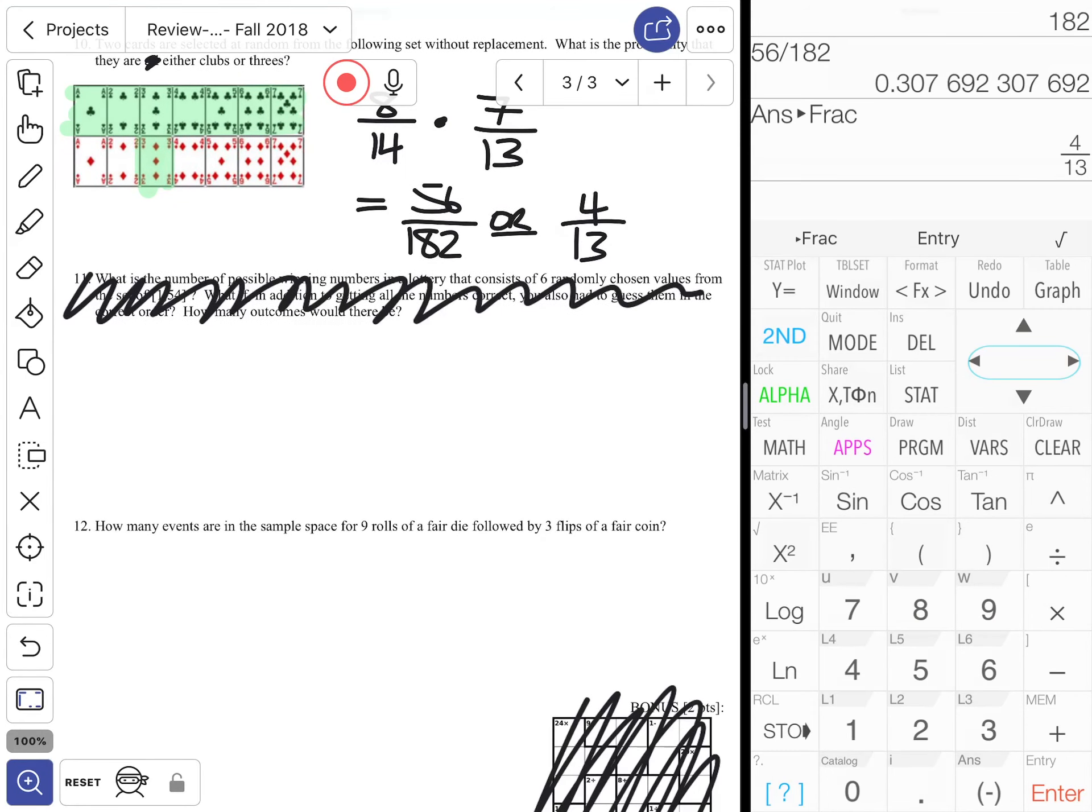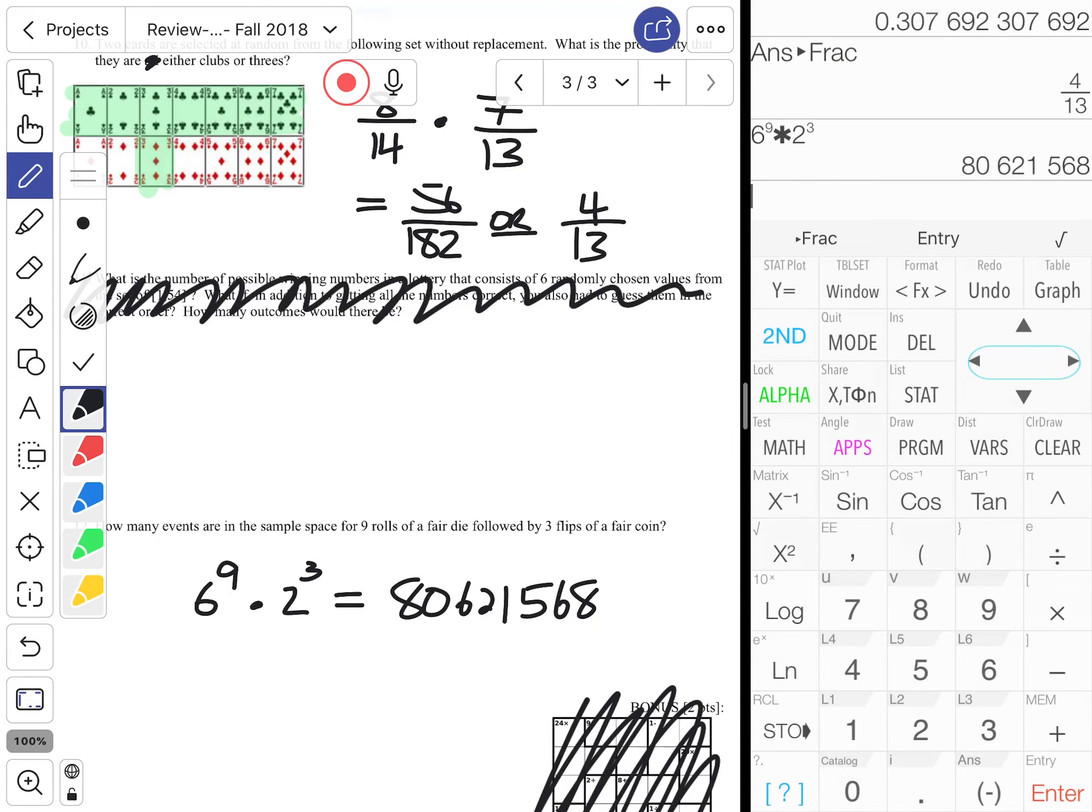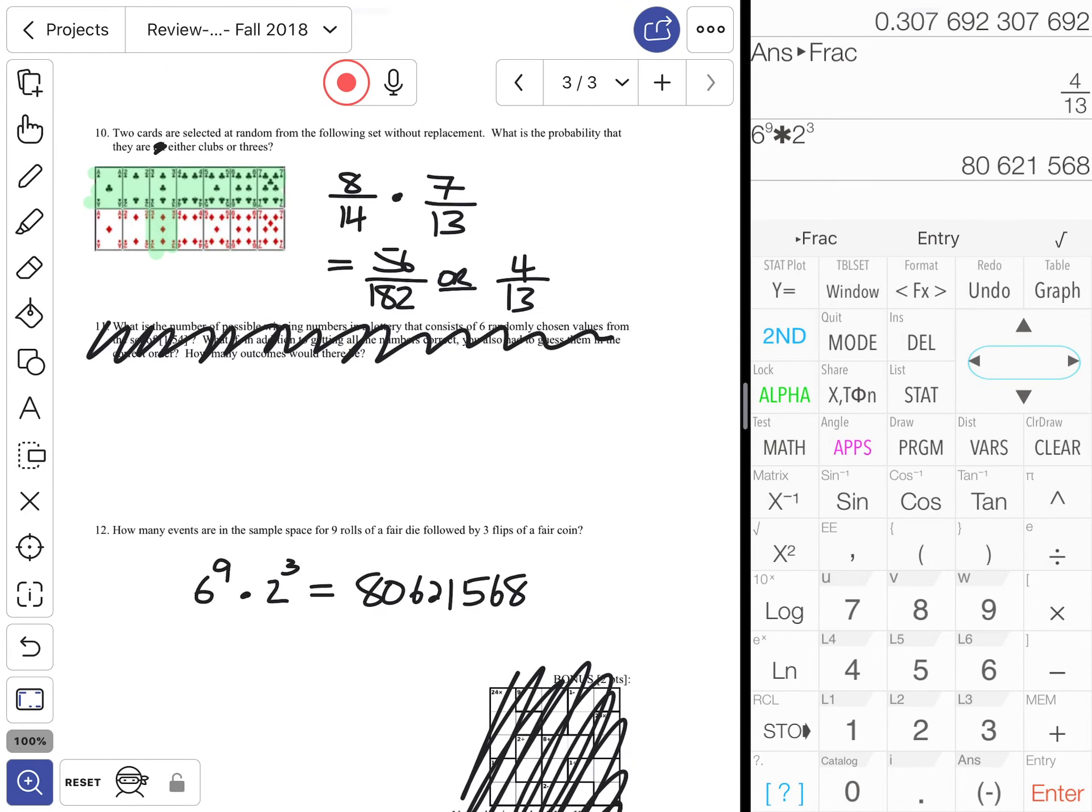Last and final: how many events are in the sample space for nine rolls of a fair die. So number of outcomes for one roll: six. Number of rolls: nine. Then three flips of a fair coin. Number of outcomes for one flip: two. Number of flips: three. So six to the ninth times two to the third, and we're looking at this monstrosity: 80,621,568. So never would consider drawing a tree diagram or listing a sample space for this particular set of outcomes. And there it is, the third.